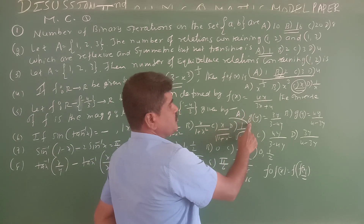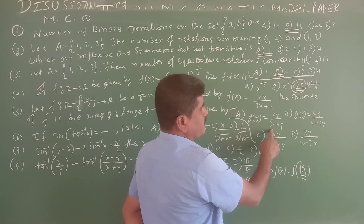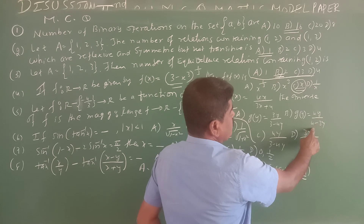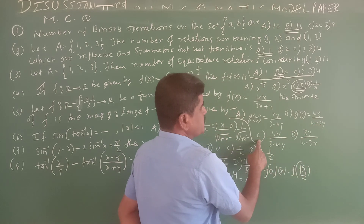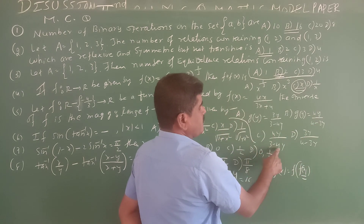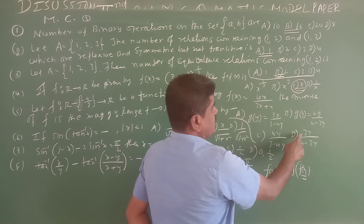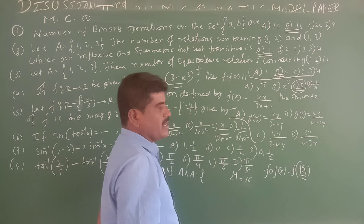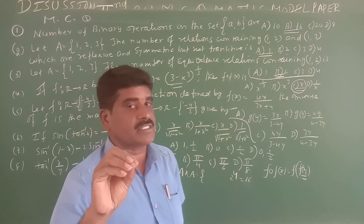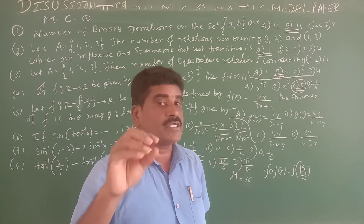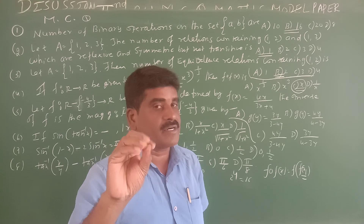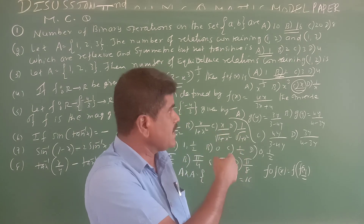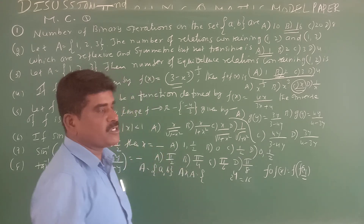The options for the inverse are: Option A: g(y) = 3y/(3-4y), Option B: g(y) = 4y/(4-3y), Option C: 4y/(3-4y), Option D: 3y/(4-3y). We will show that the function is invertible and find the inverse.